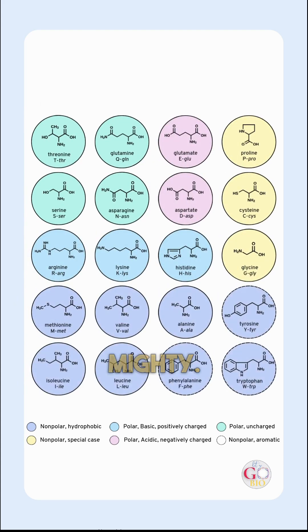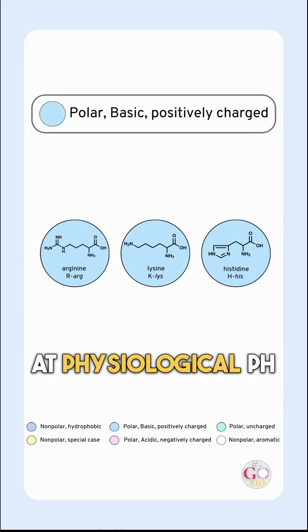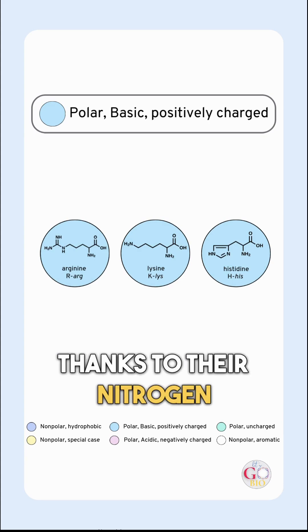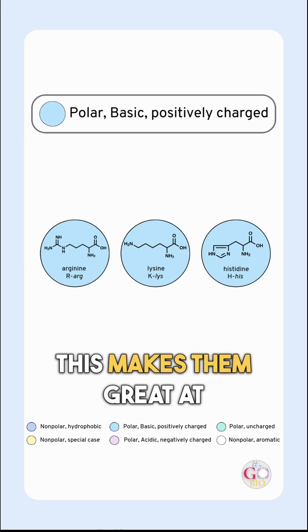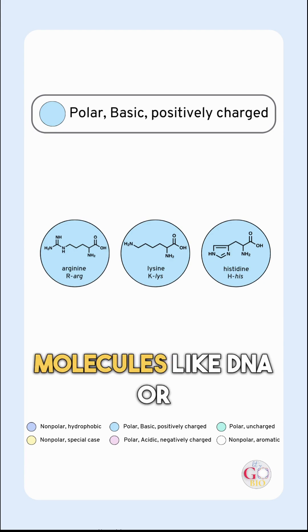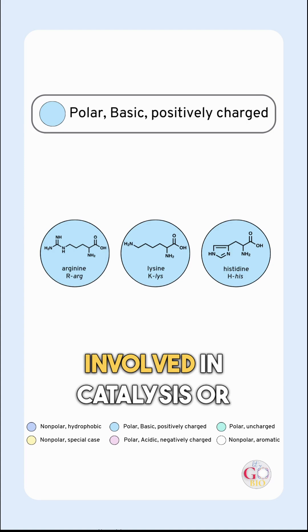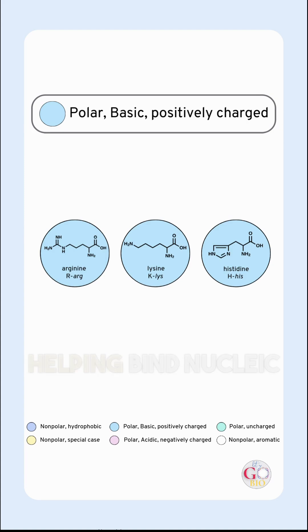Polar basic amino acids carry a positive charge at physiological pH, thanks to their nitrogen-rich side chains. This makes them great at forming ionic bonds with negatively charged molecules like DNA or acidic amino acids. They're often found in protein active sites involved in catalysis or helping bind nucleic acids.